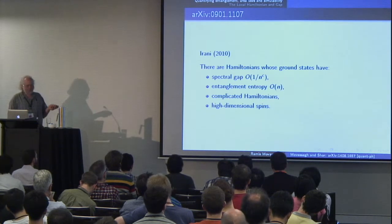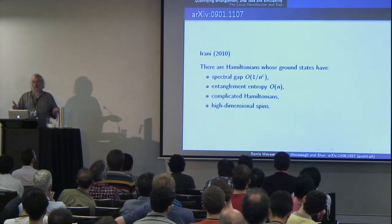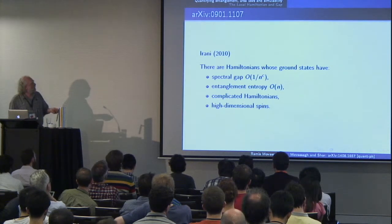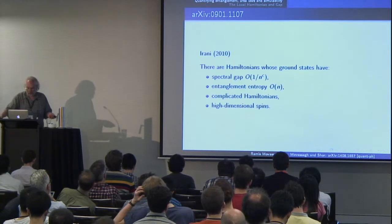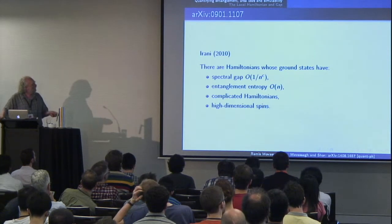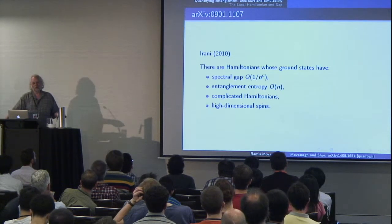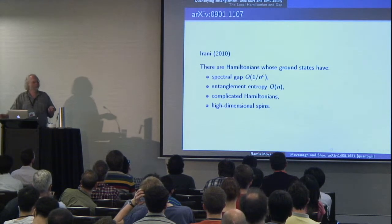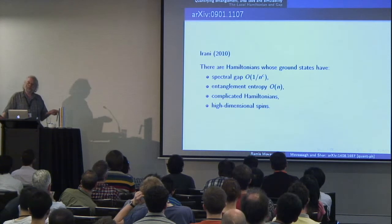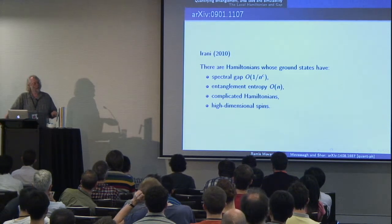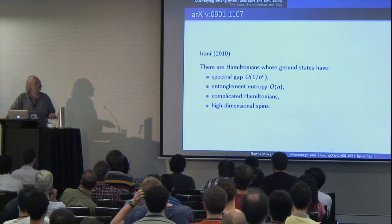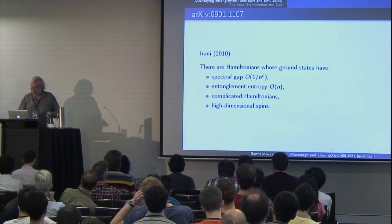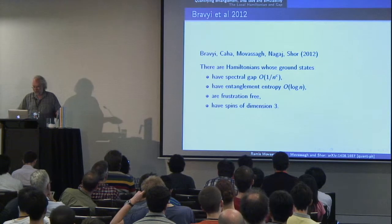Sandy Irani in 2010 took her BQP-complete spin chain and showed you can use it to find Hamiltonians with spectral gap 1/n^c and entanglement entropy O(n), which is as large as it can be — proportional to the volume and not the boundary. But the disadvantage, and the reason they're dismissed by condensed matter physicists as fine-tuned, is that they're very complicated Hamiltonians with rather high-dimensional spaces.